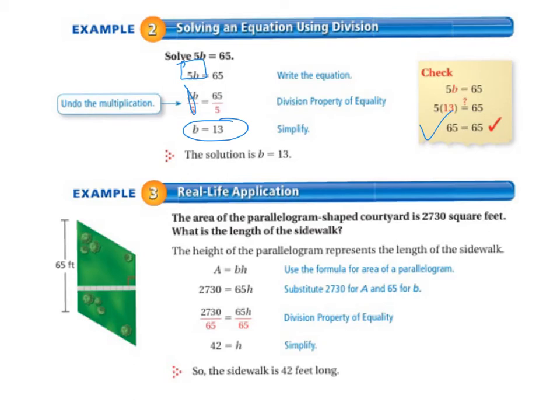Example 3, our real-life application. The area of the parallelogram shaped courtyard is 2,730 square feet. What is the length of the sidewalk? So it says the height of the parallelogram represents the length of the sidewalk. Area equals base times height.